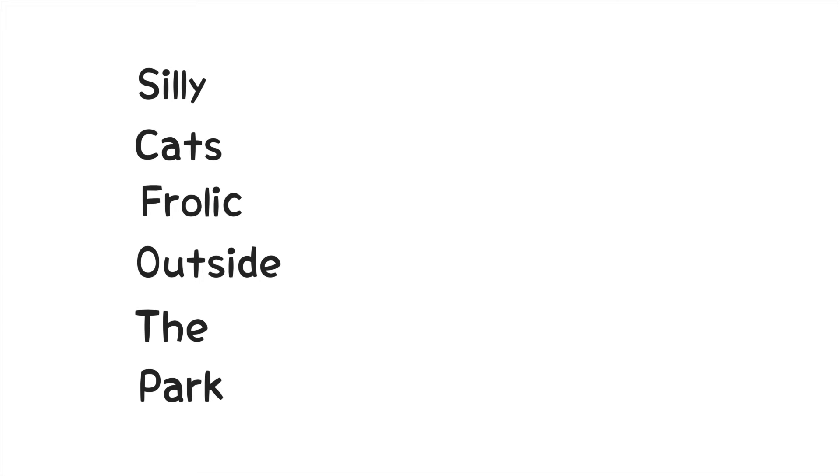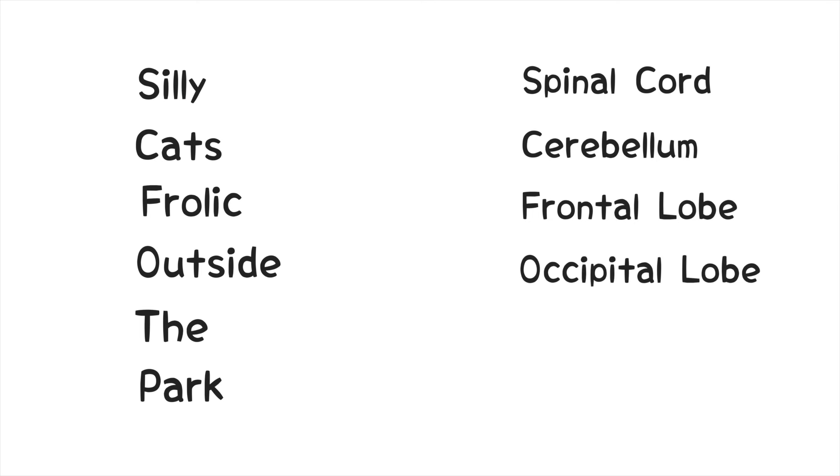Silly is for spinal cord. Cats is for cerebellum. Frolic is for frontal lobe. Outside is occipital lobe. The is temporal lobe. And park is parietal lobe.